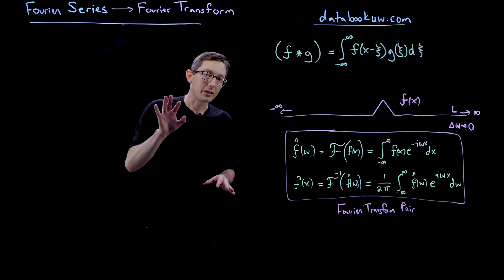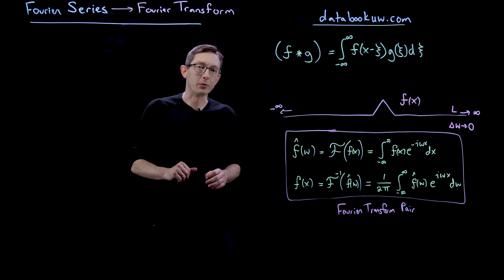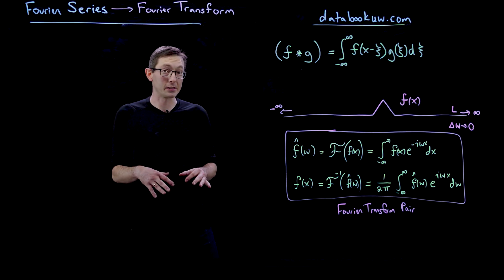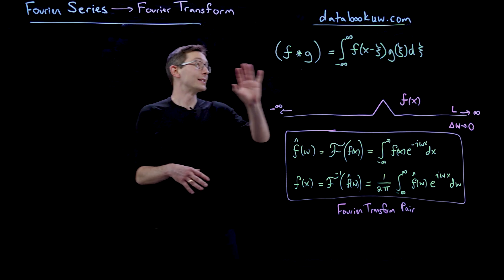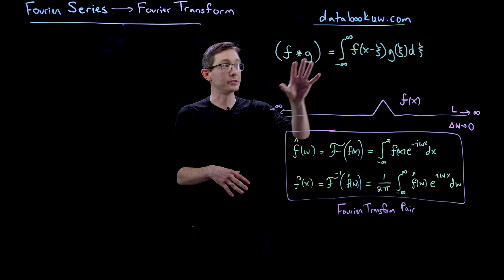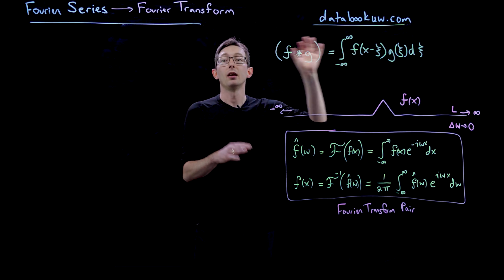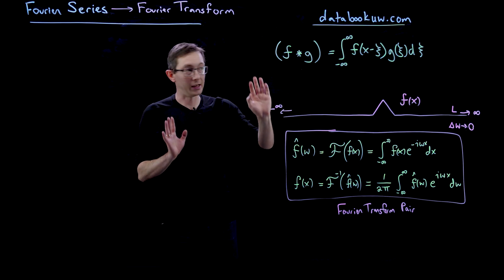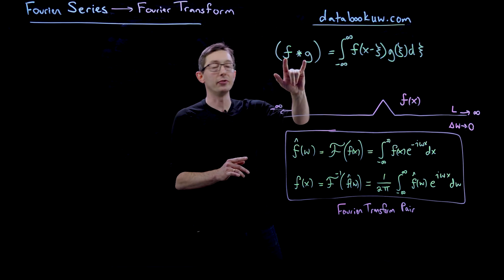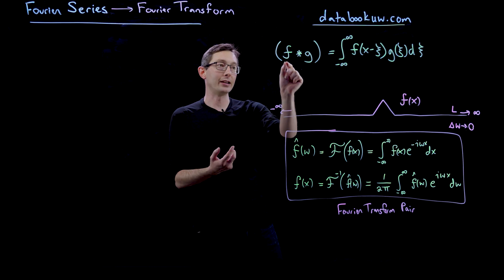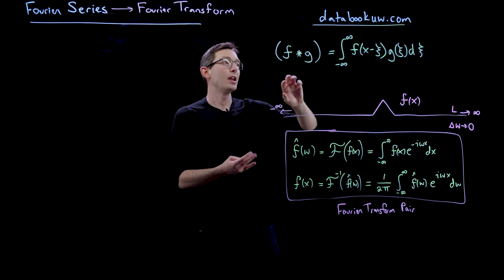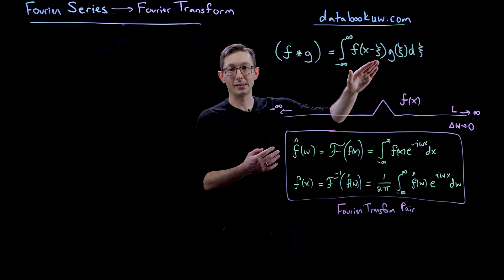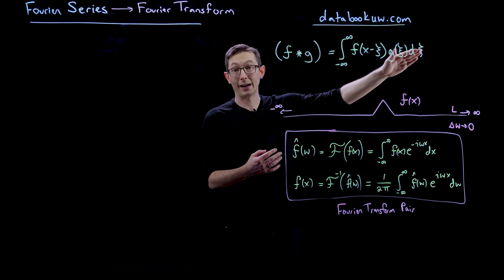Welcome back. We're talking about the Fourier transform, and in this lecture I'm going to tell you about one of my favorite properties: how you can simplify convolution integrals in a spatial variable by Fourier transforming the functions f and g. The convolution of two functions f and g is defined as f star g, and it's given by this integral: f of x minus xi times g of xi with respect to xi.